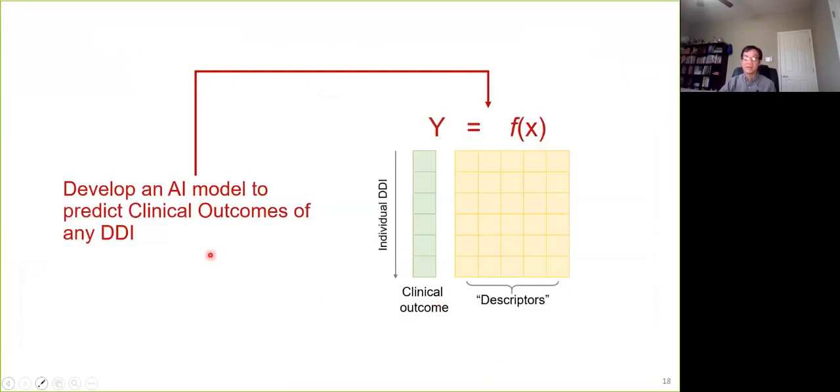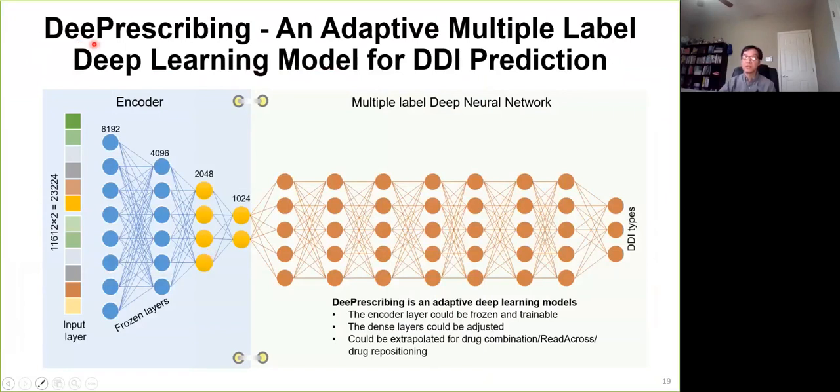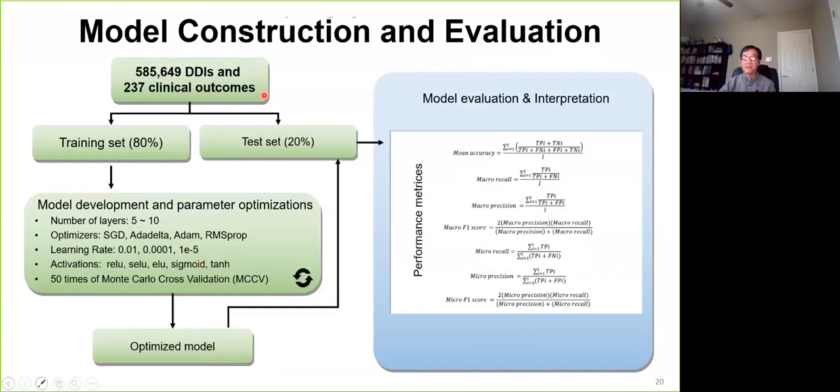So once we have the clinical outcome and descriptors for the DDIs, now it's ready for us to develop AI-based models to predict the clinical outcome of any drug-drug interaction. So here we proposed DeepPrescribing, which is an adaptive multi-label deep learning model for DDI predictions. You remember we have the CSM model encoder side. We actually merge to another multi-label deep neural network. Eventually, this model is 12 layers in the structure of the deep neural network, which actually allows you to freeze and train any layers, providing you a lot of feasibility to predict different kinds of endpoints. So in order to evaluate our model performance, we actually use the 0.6 million data divided into training and validation. We do comprehensive model optimization, eventually use the optimal models to predict the test set with sophisticated model performance metrics.